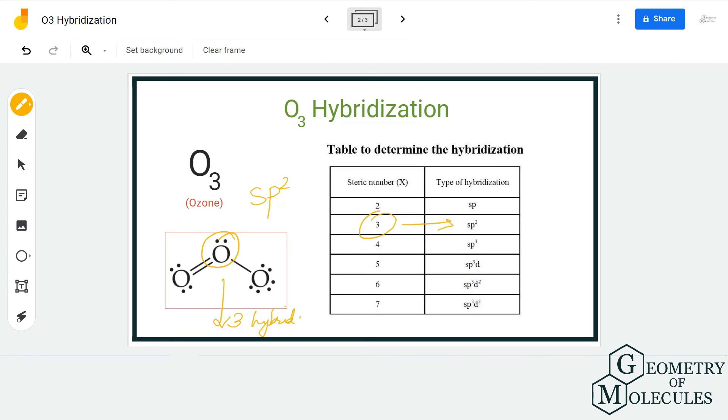bonding pairs of electrons and that holds true because there are two sigma bonds that are formed and there is one lone pair. And hence the hybridization for O3 molecule is sp2. I hope this video helps you